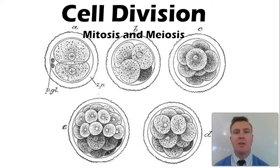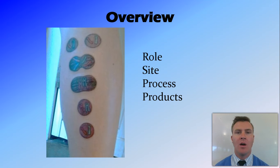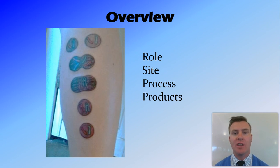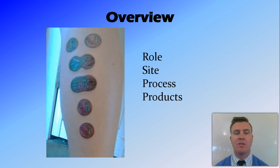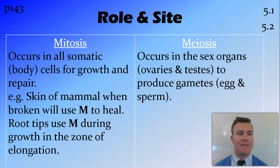In this video we're going to talk about cell division, and in particular we're going to compare the two different types of cell division: mitosis and meiosis. We're going to look at the role of mitosis and meiosis, the site in which they occur, the process they go through briefly, and the products of those two types of cell division. Because we're going to compare and contrast these two processes, I've split it into a table.